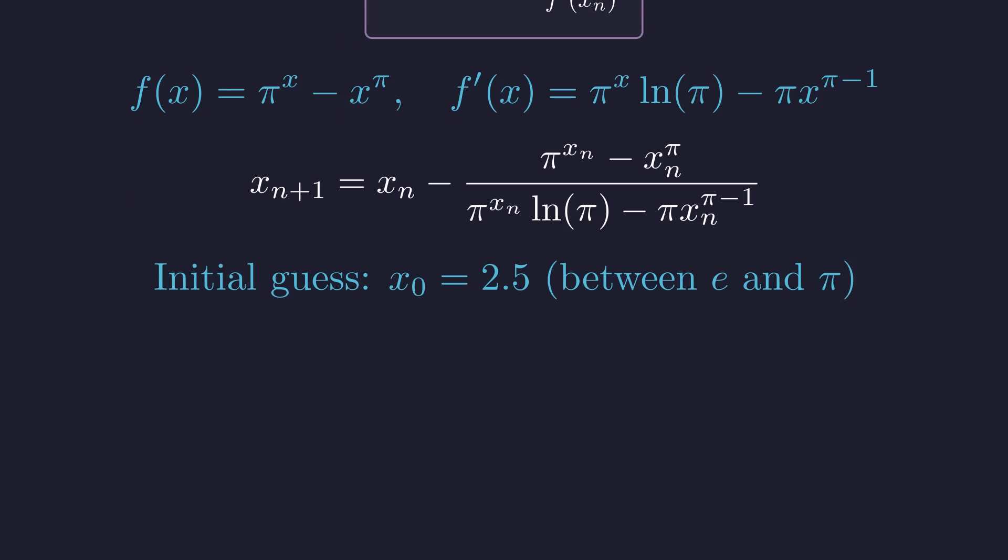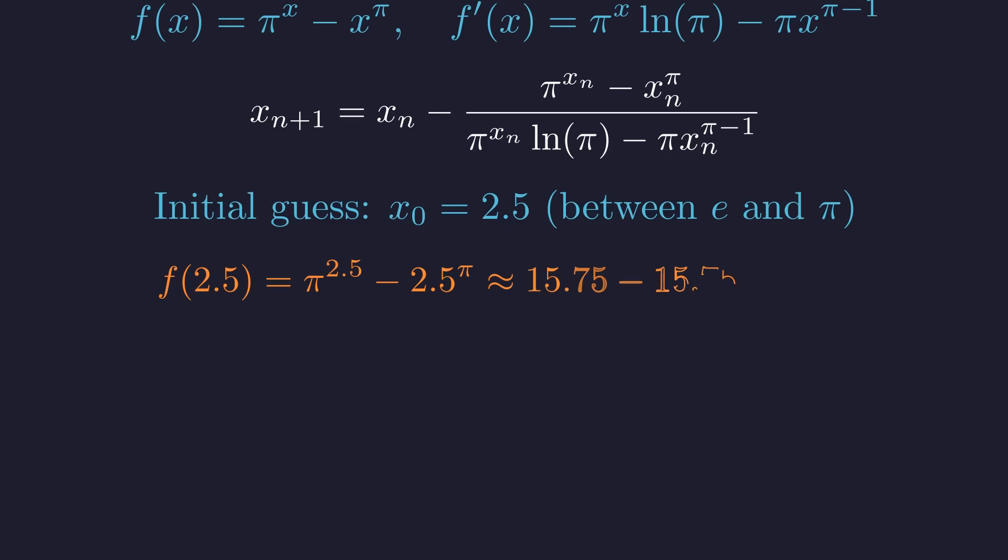Since we know the second solution lies between e and pi, let's start with 2.5 as our initial guess. Remarkably, 2.5 is already very close to our target. Pi to the 2.5 and 2.5 to the pi are nearly equal, differing by less than 0.01.